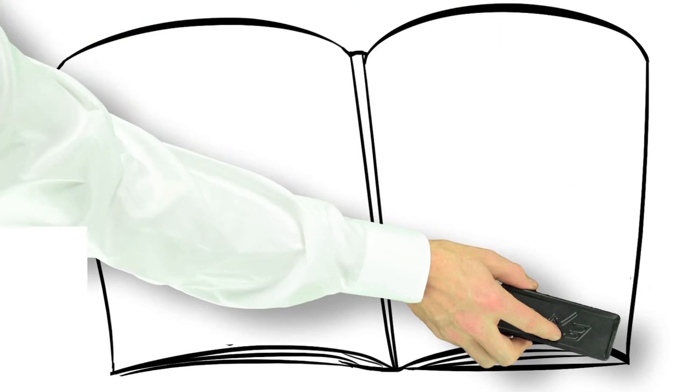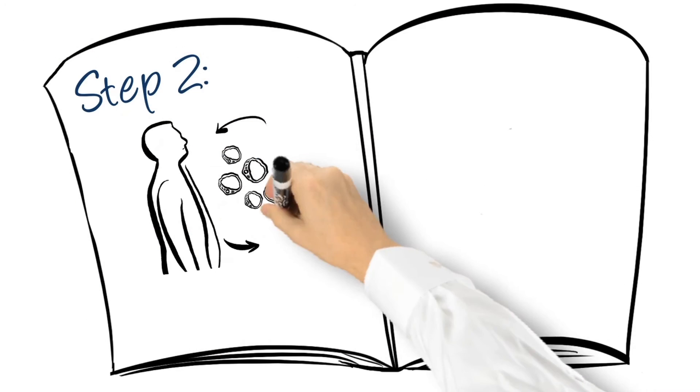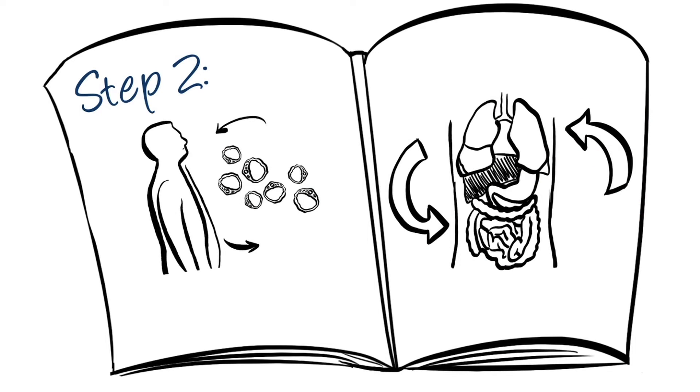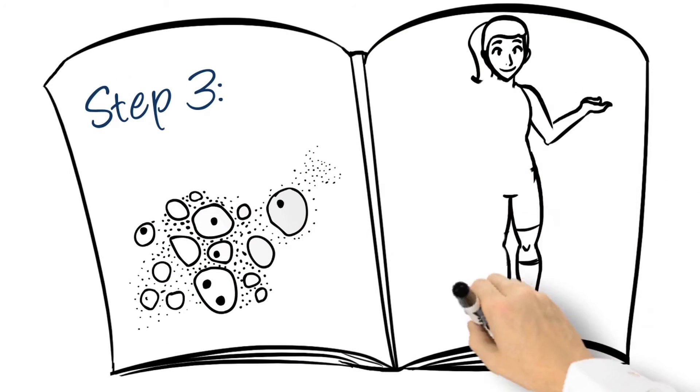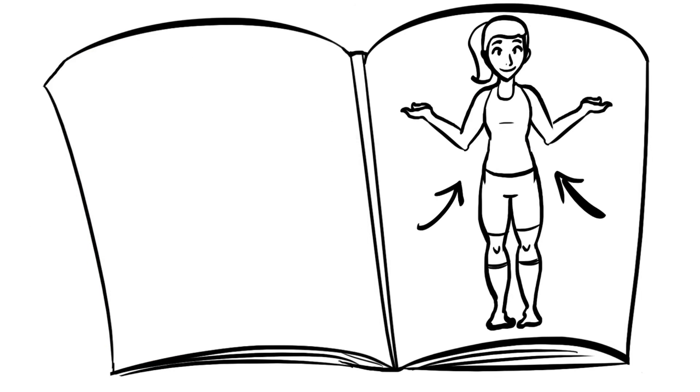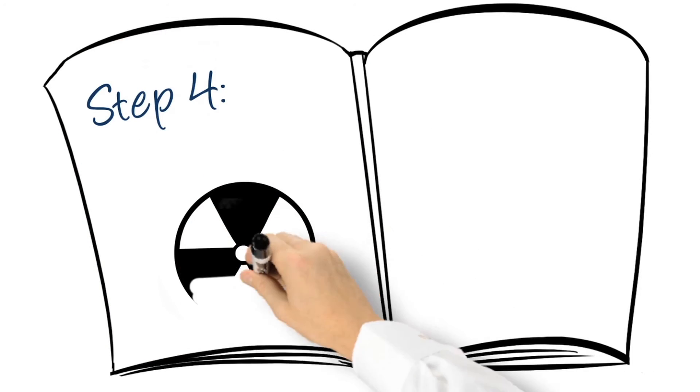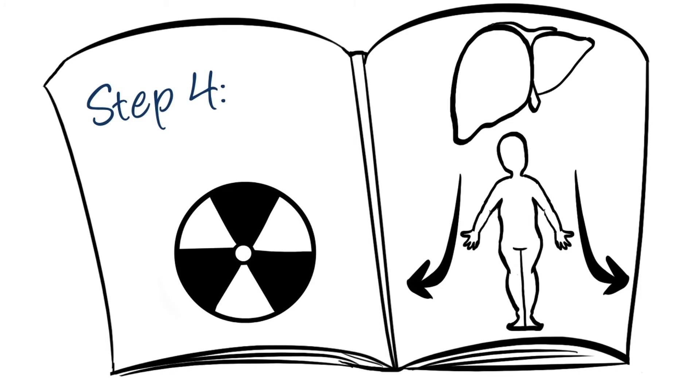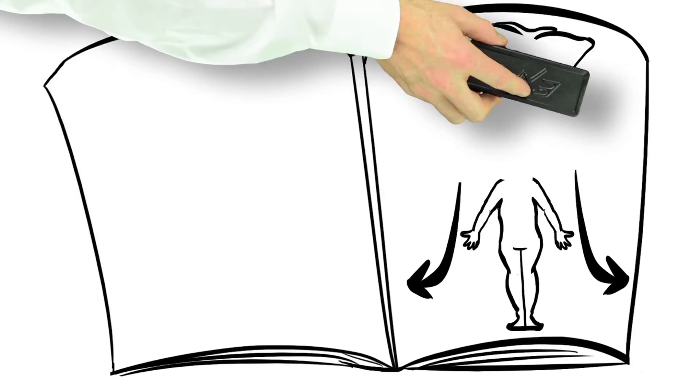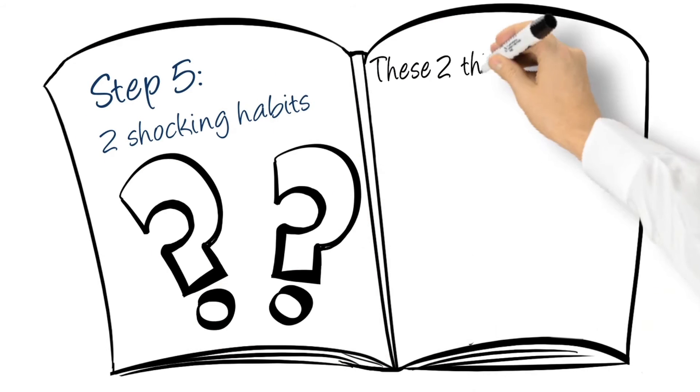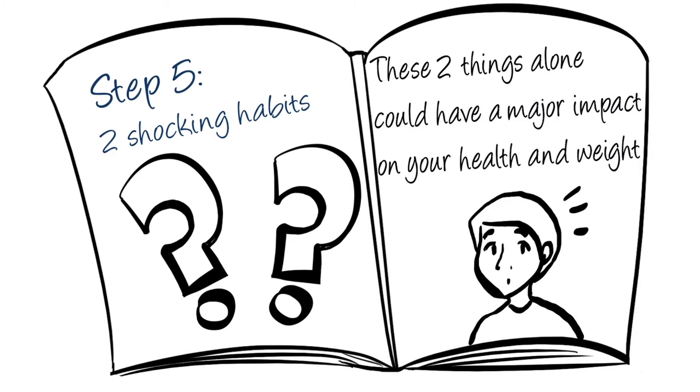In step two, we discuss metabolic rates and calorie consumption, show you how to fix a sluggish metabolism and how to accelerate it for maximum fat-burning results. Step three is all about hormones, how they affect your body and why they do so, and how you can fix imbalances. Step four teaches you about toxins, liver cleansing, and shows you what you need to do to purify your body and get it as clean as a whistle. And finally, in step five, we reveal two shocking habits that cause significant belly fat and show you how to turn those things around. These two things alone could have a major impact on your health and weight and are very commonly overlooked.